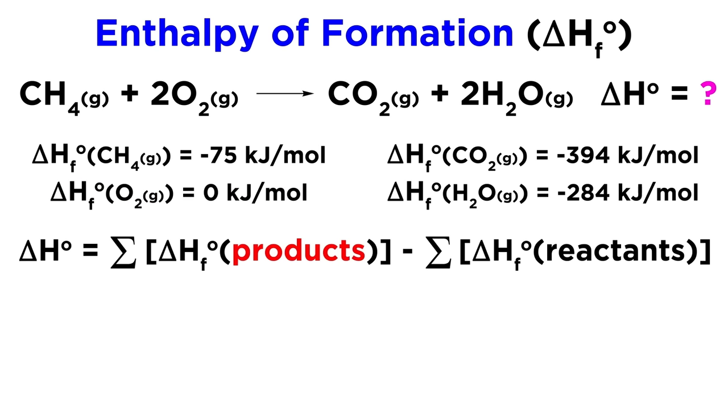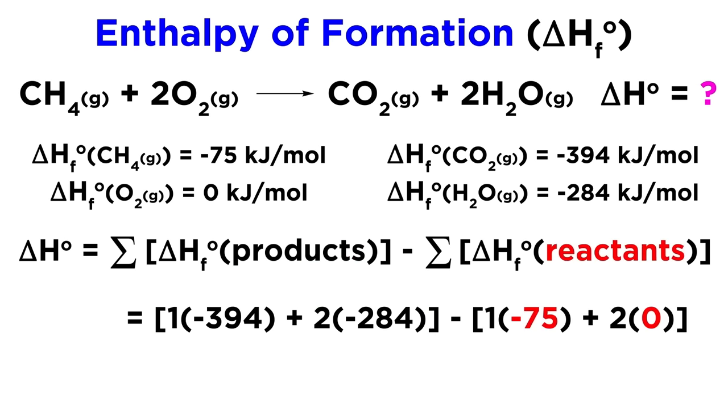Now we take the products first, so we plug in our value for CO2, as well as our value for water vapor, making sure to multiply that one by two, since it has a coefficient of two in the balanced equation. Let's place all of that in brackets as well, and subtract this whole second term from this first term.